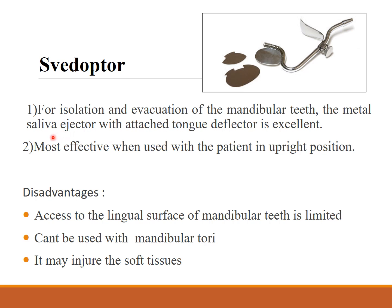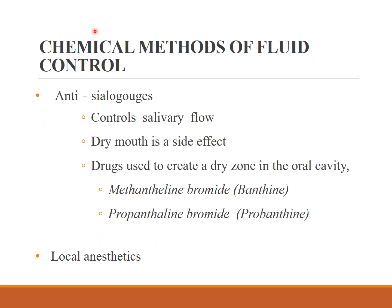Cellulose wafers can be used for isolation and evacuation of mandibular teeth. The metal ejector with attached tongue deflector is excellent. It is most effective when used with the patient in the upright position. Its disadvantage is that access to the lingual surface of the mandibular teeth is limited, and it cannot be used with mandibular tori.